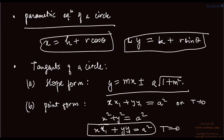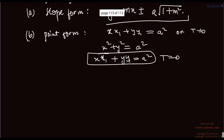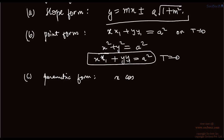The third type is parametric form. Parametric form gives x cos alpha plus y sin alpha equals a. This is the parametric form of a tangent for a circle.